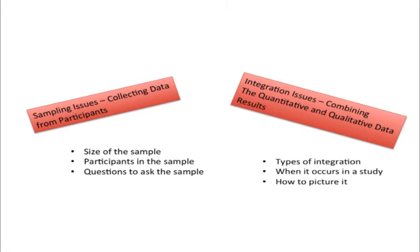In terms of sampling, I'm going to talk about how we collect data from participants in a mixed methods study — the size of the sample, who the participants might be, and even some questions that might be asked of the sample. On integration, I'll turn to three topics: the types of integration we see in mixed methods research, when it occurs in a study, and how to picture it. Integration is simply the combining of quantitative and qualitative results or data in a mixed methods project.